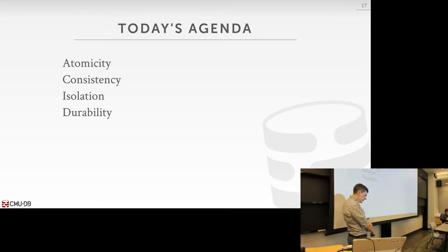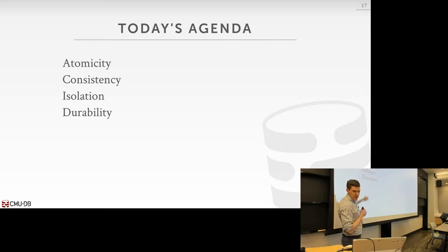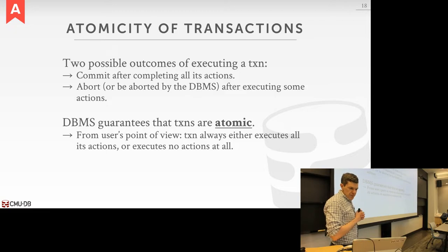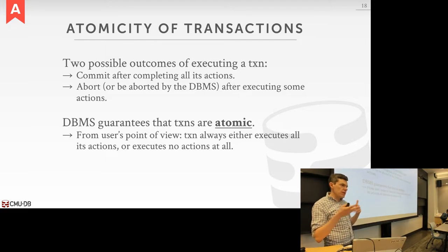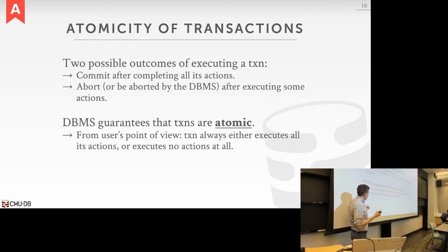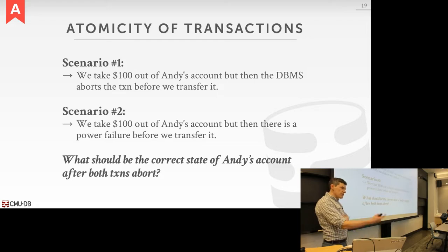ACID is what a relational database management system means when it says it supports transactions. NoSQL systems that don't do transactions typically sacrifice atomicity and isolation. Let's talk about atomicity. There are two outcomes of a transaction: it commits and all changes are applied atomically, or it gets aborted. The guarantee we provide is that all changes appear as if they happened at exactly the same time — either everything happens or none of it happens.